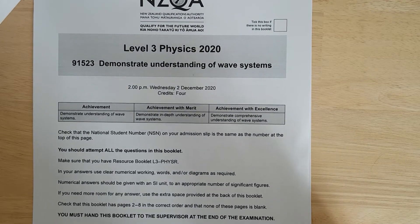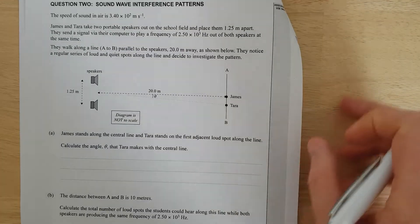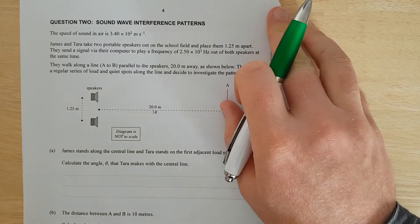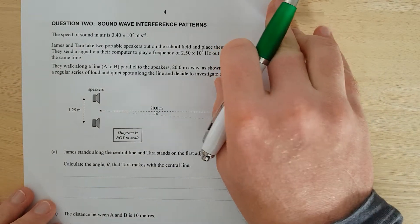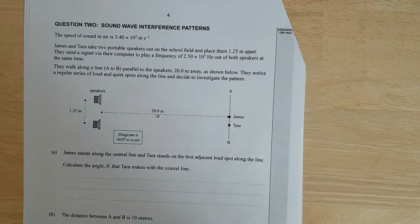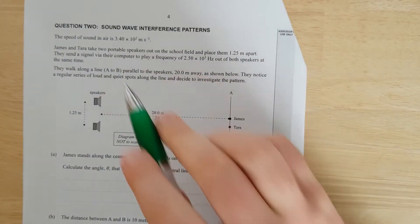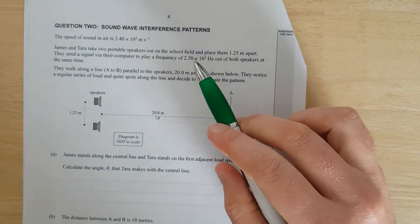This is question two of the 2020 Waves exam. Question two. James and Tara take two portable speakers. Look at that, they haven't changed the wave speed. Sometimes they do that in exams and that's diabolical.